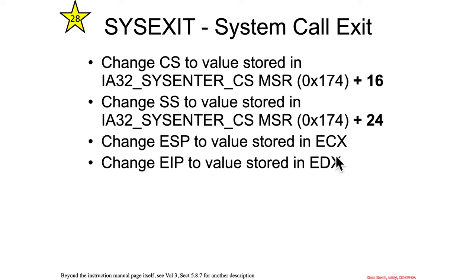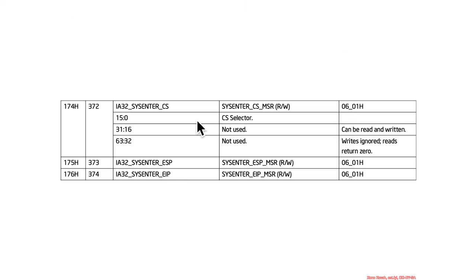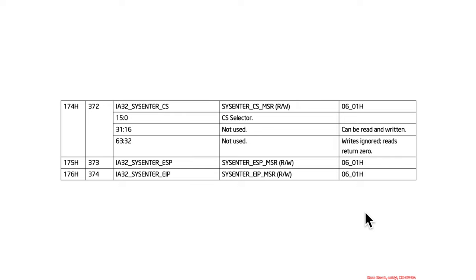That does not seem symmetrical with sysenter. There's an implicit expectation that sysenter may not have stored the return state, but sysexit had better have stored the ESP value into ECX so it can be put back by sysexit. No matter what, whatever is sitting in ECX and EDX goes back into ESP and EIP when sysexit is called. So ESP and EIP are one-way — they get you a value for the kernel, but they don't give you a way back.